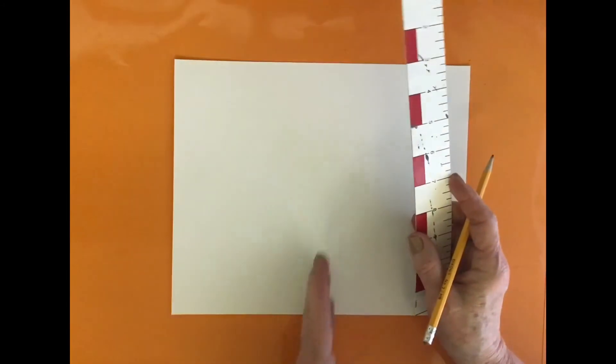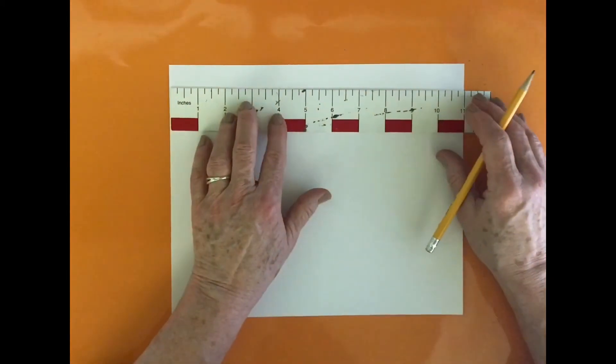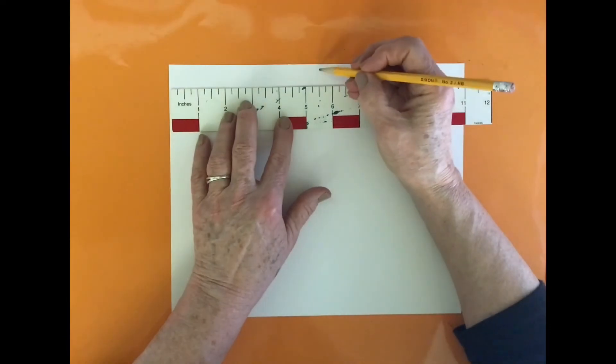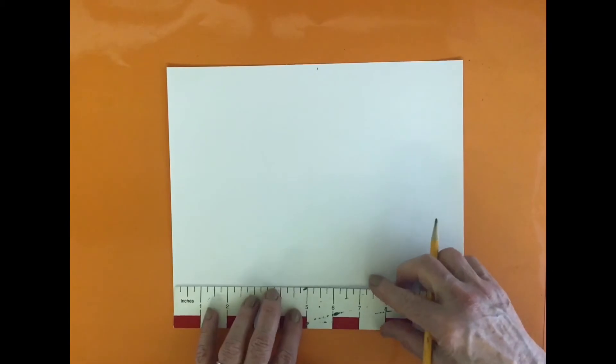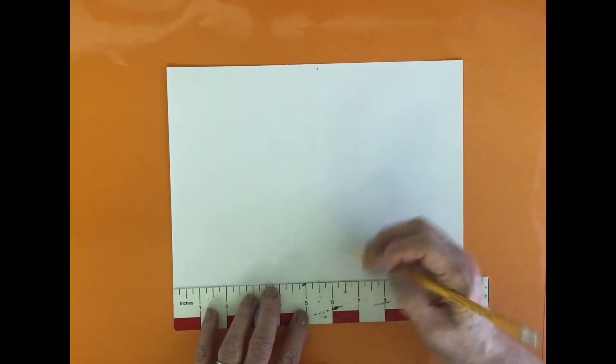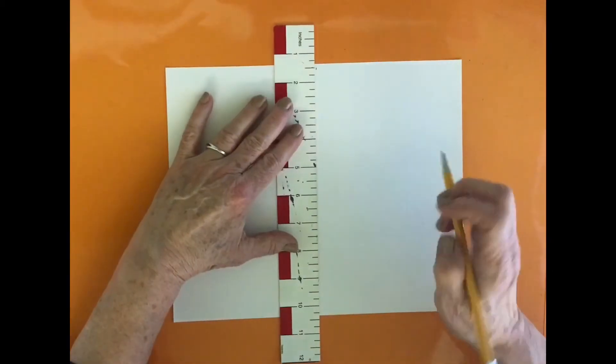Taking a rectangle piece of paper, I want to make a line in the middle so I am going to measure out 5 1/2 inches because that's the middle of my paper, and 5 1/2 inches. And draw a line.